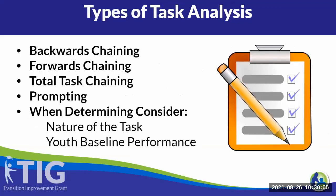Let's briefly talk about the types of task analysis. A further video in this module will allow you to dig deeper into the different types. Task analysis types include backwards chaining, where the teacher or trainer completes all of the steps identified in the task analysis except for the final step in the chain. When the youth accurately performs the final step, reinforcement is delivered and the next-to-last step is introduced.